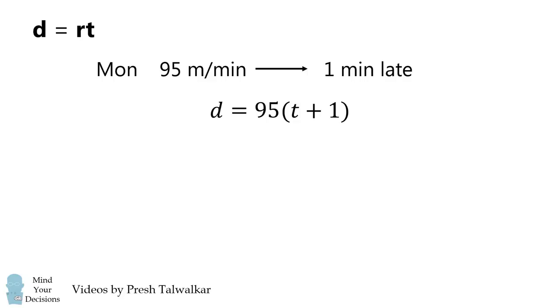We'll get started with the formula that distance is equal to rate times time. This is usually abbreviated d = rt. On Monday, Pedro walks at a rate of 95 meters per minute, and reaches one minute late. So the distance is equal to the rate of 95 multiplied by the time of t plus 1.